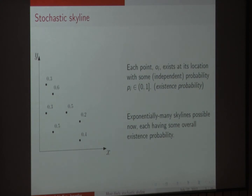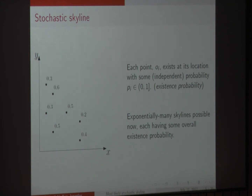What we want to do is look at this in a slightly different setting. In our setting, the points are given with known locations, and each point O sub i has associated with it some independent probability t sub i, which we call the existence probability. As soon as you do this, the problem becomes quite challenging because now there can be exponentially many possible skylines, and each skyline is associated with some overall existence probability.